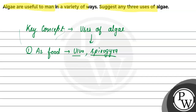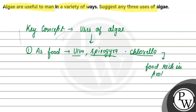These are used as food. Chlorella is a type of algae that is grown and provides human food rich in protein. Chlorella is edible and is rich in protein, lipids, carbohydrates, vitamins, and minerals.